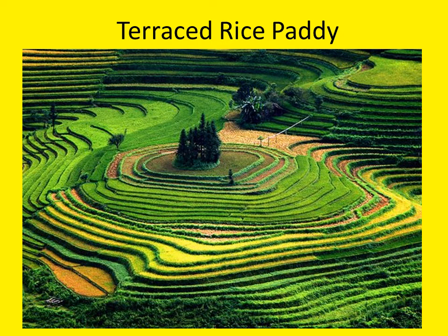In some regions of the Central Highlands, as well as other parts of Vietnam, Vietnamese agriculturalists have developed innovative methods to maximize land use and productivity. Pictured here are terraced rice paddies, which allow farmers to grow rice on the sides of mountains and steep hills where otherwise few crops could be grown.